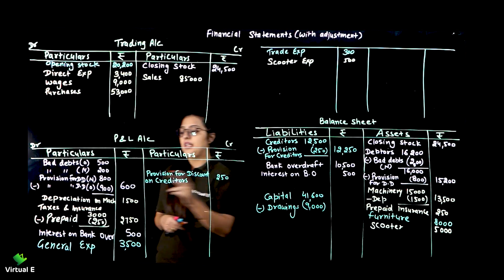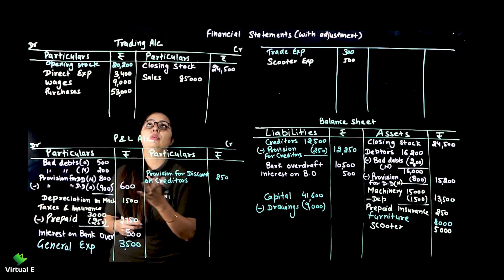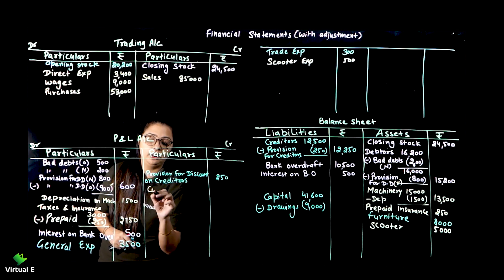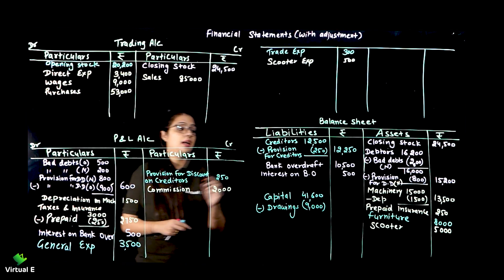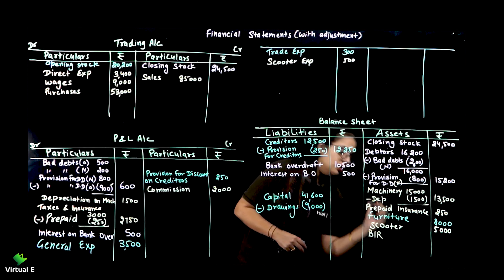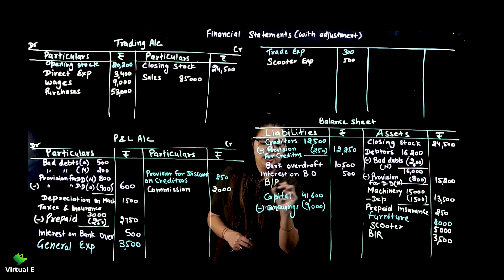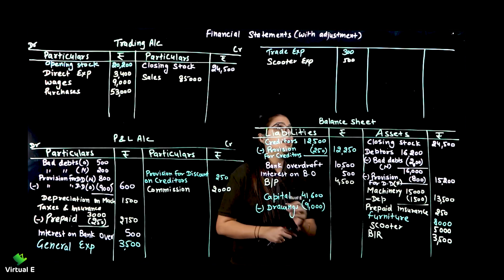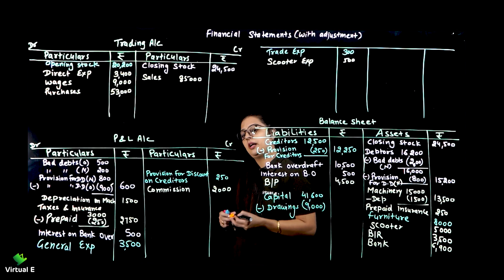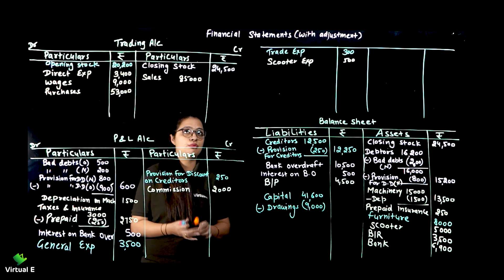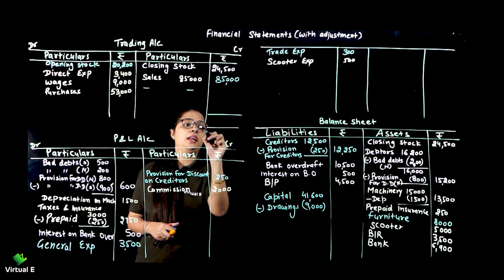Provision for doubtful debts already entered - old one and new one. Discount part is not applicable here so no need to write. Commission given is on credit side, so we write it in credit - meaning it is received. Bills receivable - since you are going to receive it, it is an asset: 3,500. Bills payable - you are going to pay it, so it is a liability: 4,500. Bank last - 6,900 rupees in bank, so that is also our asset. Sales have no return so 85,000 directly entered.